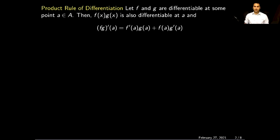What is the product rule of differentiation? If we have two functions f and g, and these two functions are both differentiable at some point a, then the product f(x) times g(x) is also differentiable at a. You can compute the derivative of the product by this formula: the derivative of f at a times g evaluated at a, plus the value of f at a times the derivative of g at a.